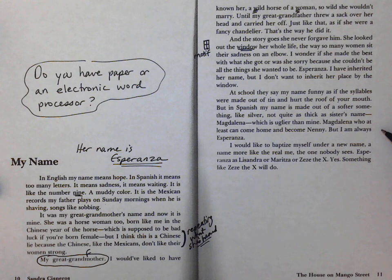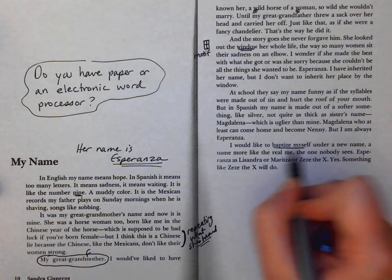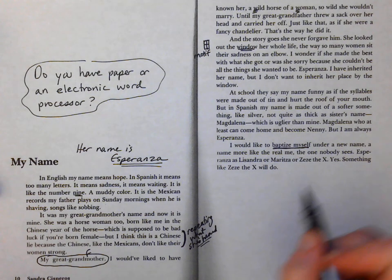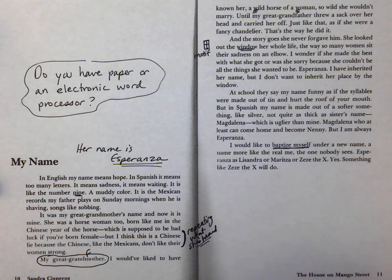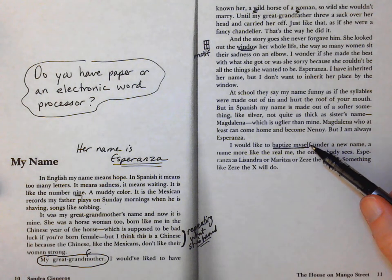Not quite as thick as sister's name, Magdalena, which is uglier than mine. Magdalena, who at least can come home and become Nanny, but I am always Esperanza. I would like to baptize myself under a new name. I love that imagery. She's in a Catholic culture and this idea of baptism as a rebirth.